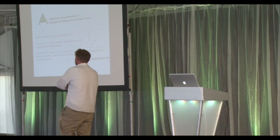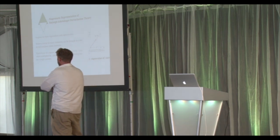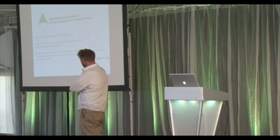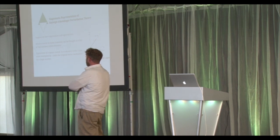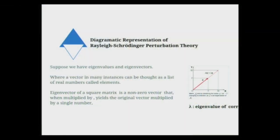Eigenvectors of a square matrix is a non-zero vector that when multiplied by lambda yields the original vector multiplied by a single number. So here we can see that you're basically amplifying a set — where x and y were at one point, lambda-x and lambda-y are at a different point.